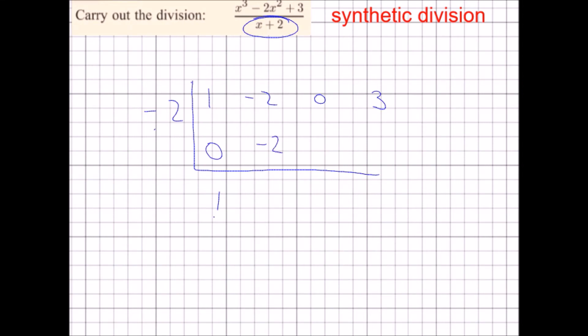I now add these two numbers to get negative 4. Now I multiply the negative 4 with the negative 2, and I get 8. Add those numbers, multiply that 8 by negative 2, add those numbers there. That last number we separate off - that's the remainder, and this term here is the quotient.